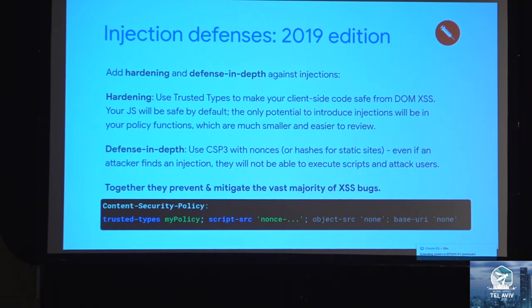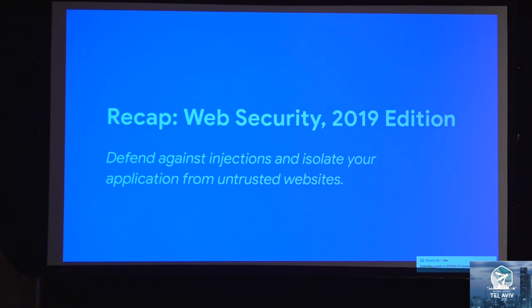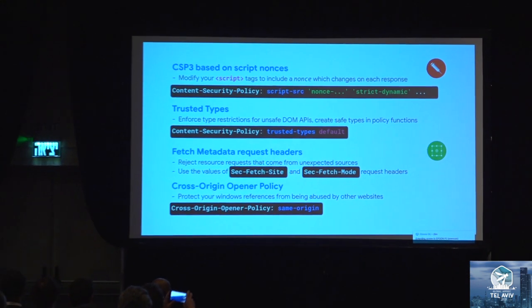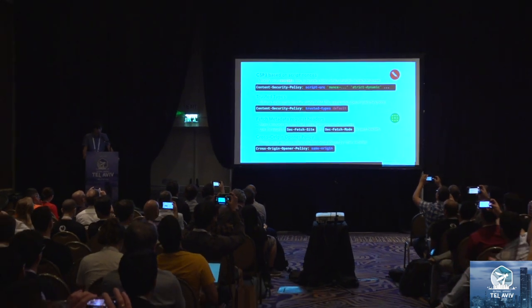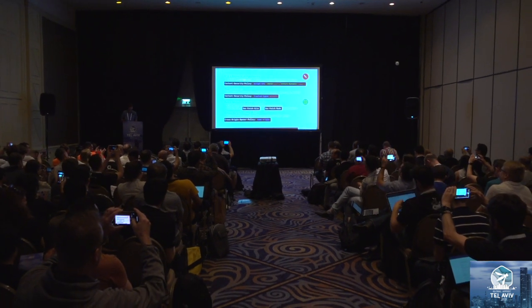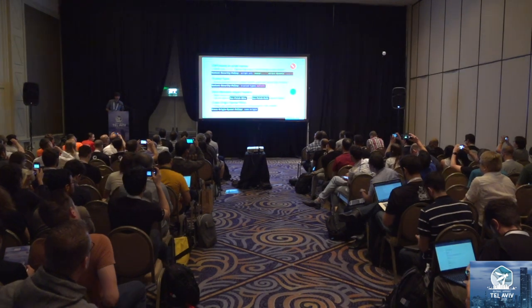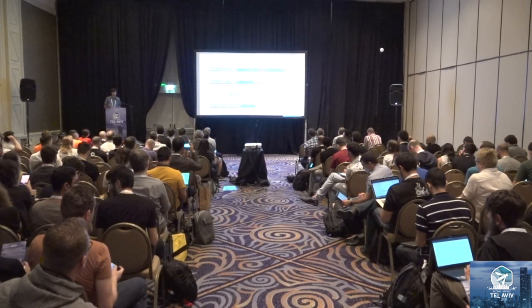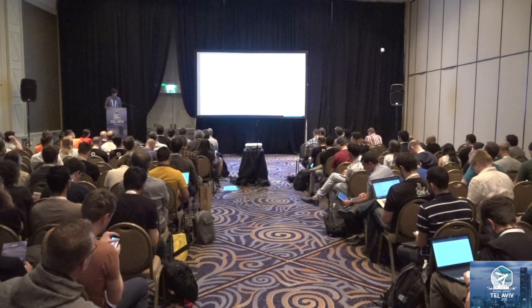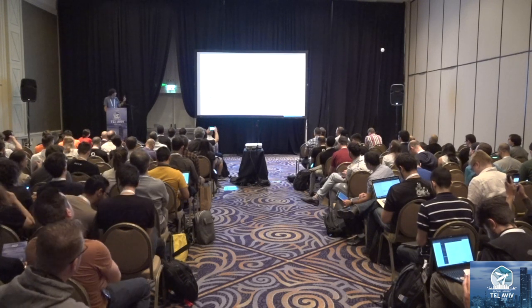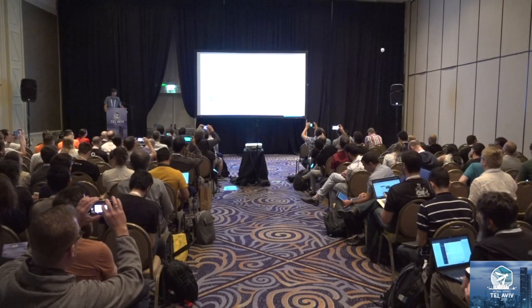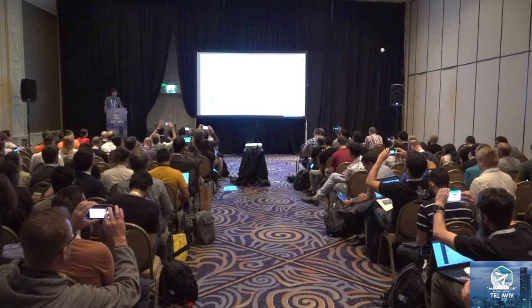That should be your 2019 goal. With that, I'll wrap up. You can now wake up again — I put everything on a single slide. The TLDR: use CSP nonces for reflected and stored XSS, Trusted Types for DOM-based XSS, Fetch Metadata request headers to protect against isolation issues based on resource loads, and Cross-Origin Opener Policy to protect your window references from tampering. Thank you for being here today. The slides are online, and I'll hang around a bit longer in case you have questions.